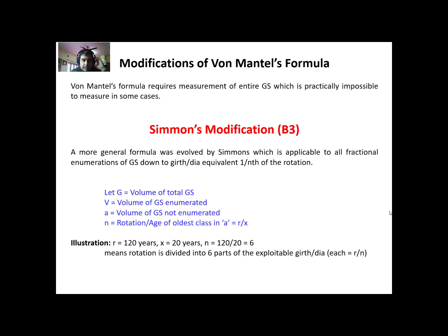Welcome back. Now moving towards another modification of von Mantel's formula — that is Simmons' modification. You already know that in the previous modification given by Harvard, the growing stock was assessed to half of the exploitable diameter or age. A more general formula was given by Simmons.